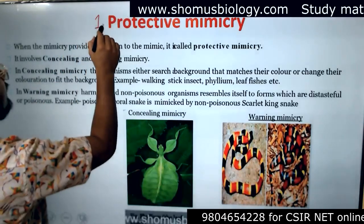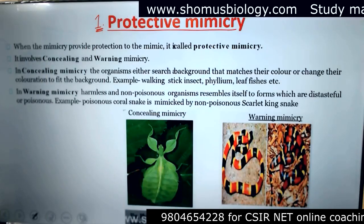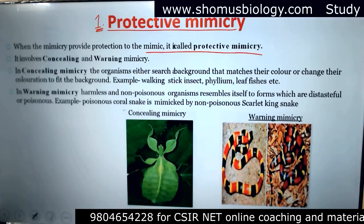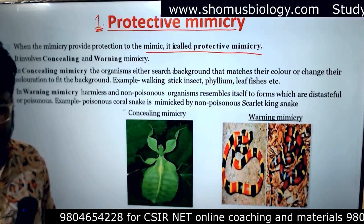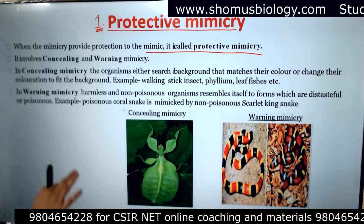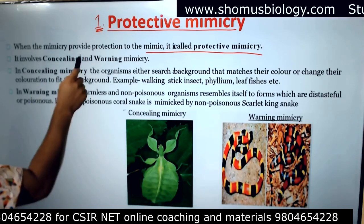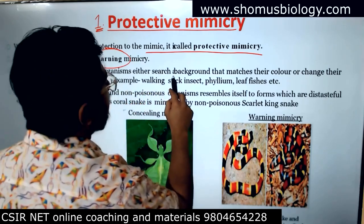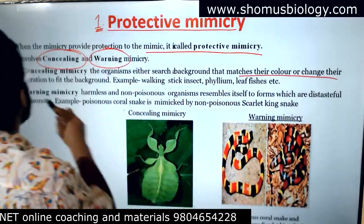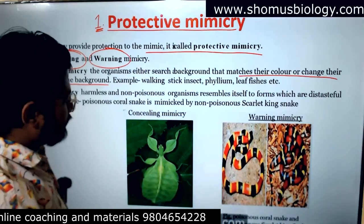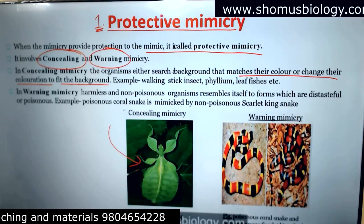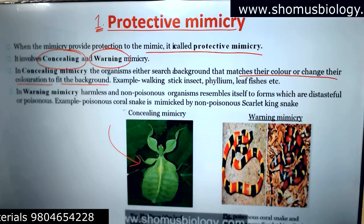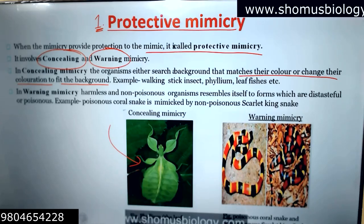The first type is protective mimicry. When the mimicry provides protection to the mimic, it is known as protective mimicry. Protective mimicry is of two different types: concealing mimicry and warning mimicry. In concealing mimicry, the organism either searches a background that matches their color, or changes their coloration to fit the background. For example, this insect looks like a leaf — the resemblance is uncanny, you cannot even differentiate.